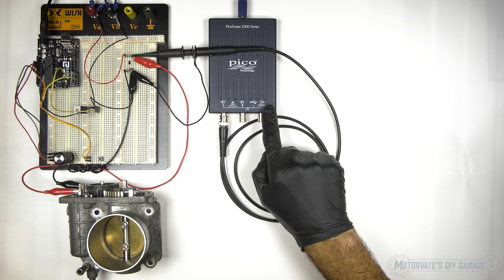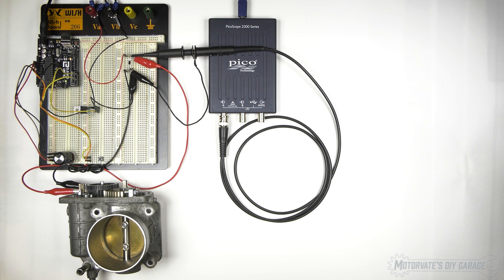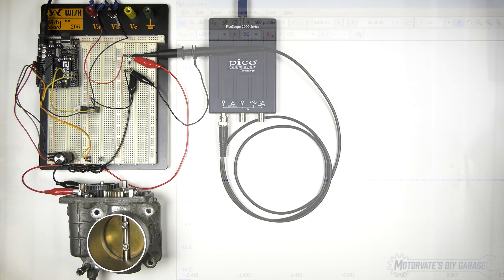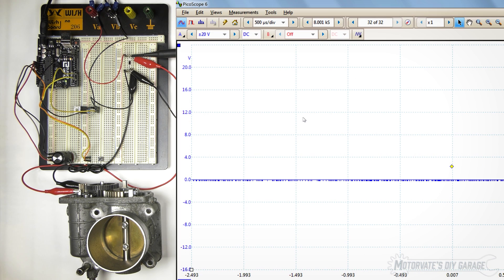This here is a Picoscope 2000, which is part of a digital storage oscilloscope. That allows us to see the signal that's actually traveling on the wires to the motor of our throttle body. Let's now bring it up on screen. Okay, there it is.